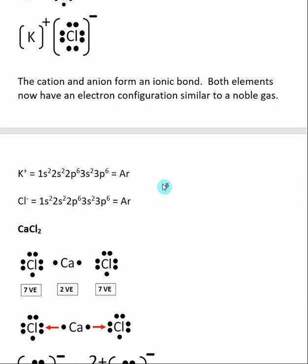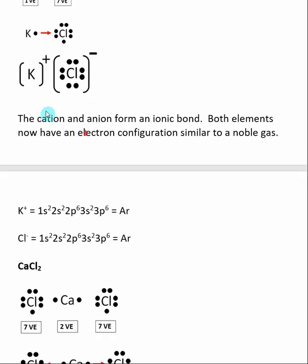It does this, once again, to create an electron configuration similar to a noble gas. So even though we remove one valence electron here for potassium, in doing that, it exposes the noble gas core that is left when we remove this one valence electron. So potassium plus has an electron configuration that is the same as argon.